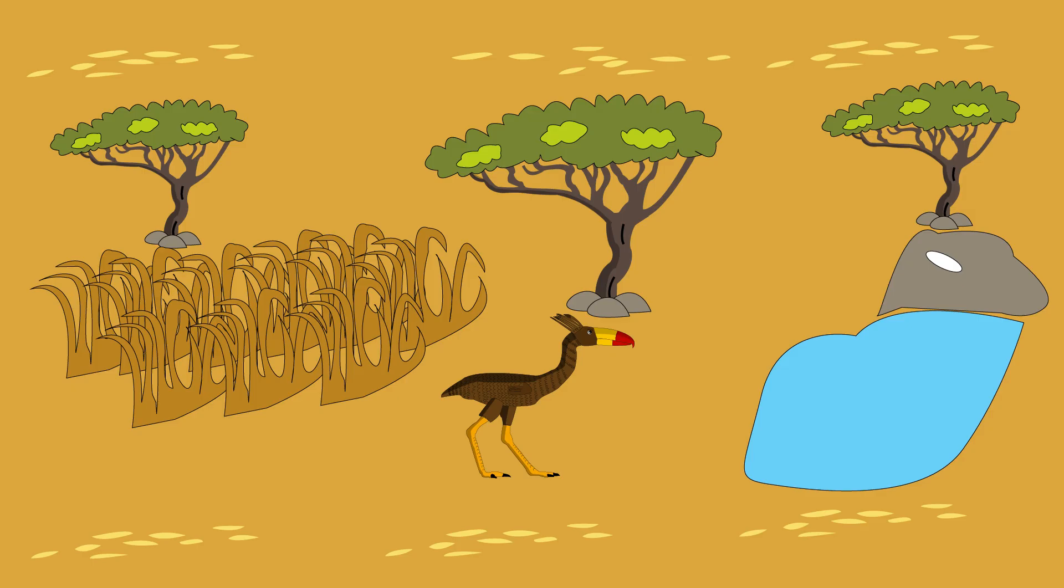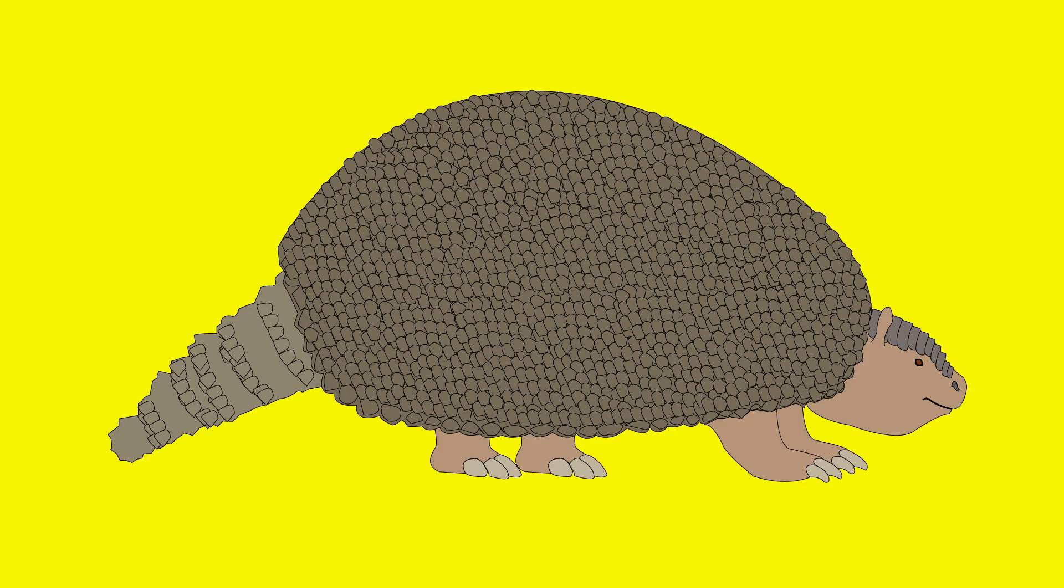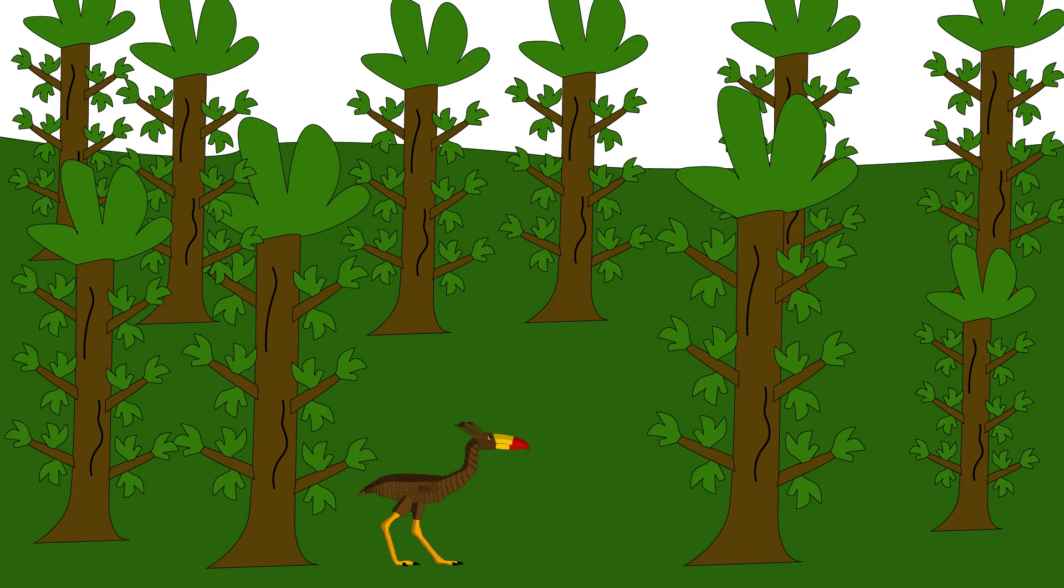The dry season comes. Water holes shrink. You fight for every drop against other terror birds, against armored glyptodonts, even against herds of giant ground sloths. The sun beats down, hunger gnaws. You risk everything for a mouthful of water, a scrap of meat.